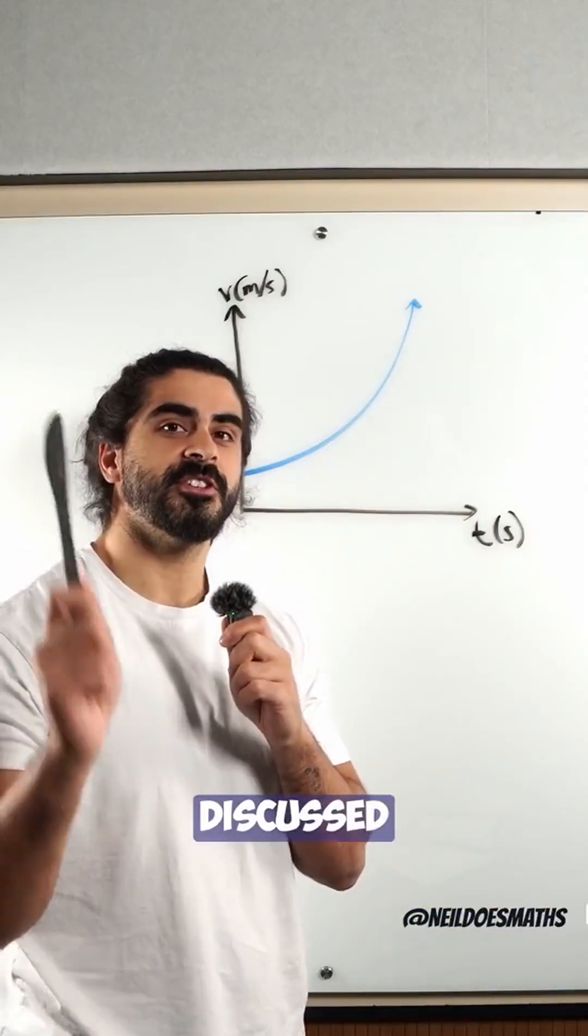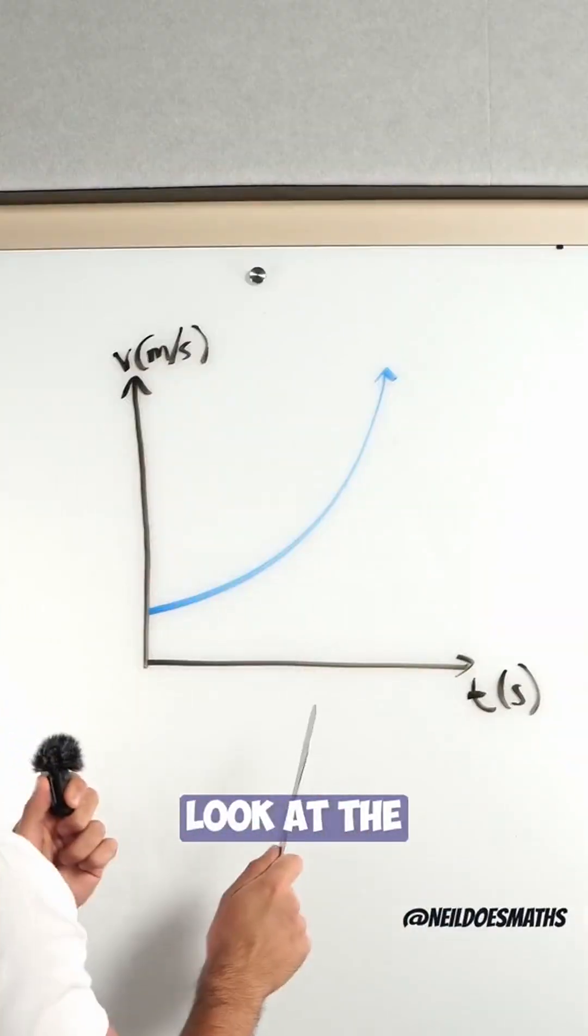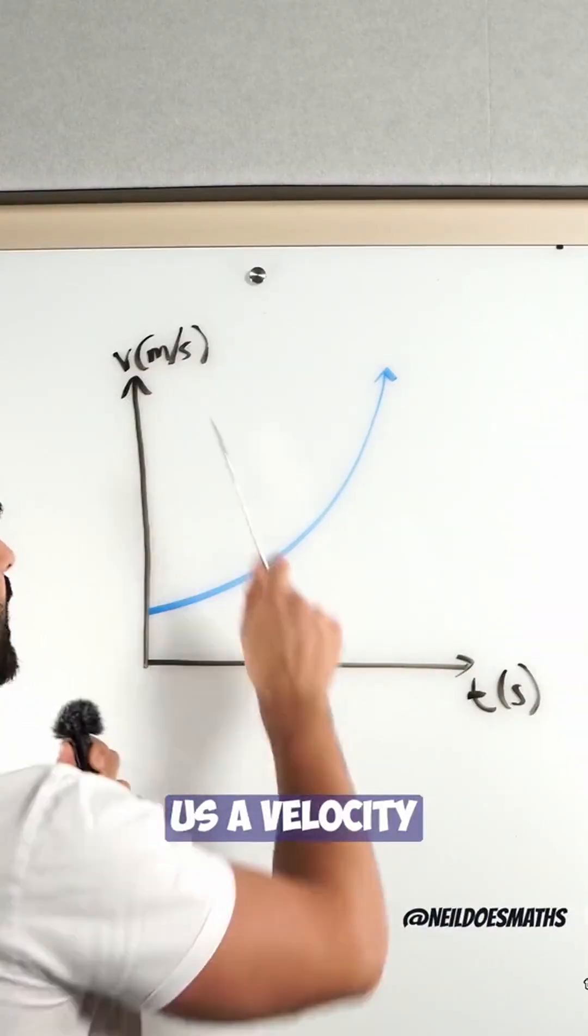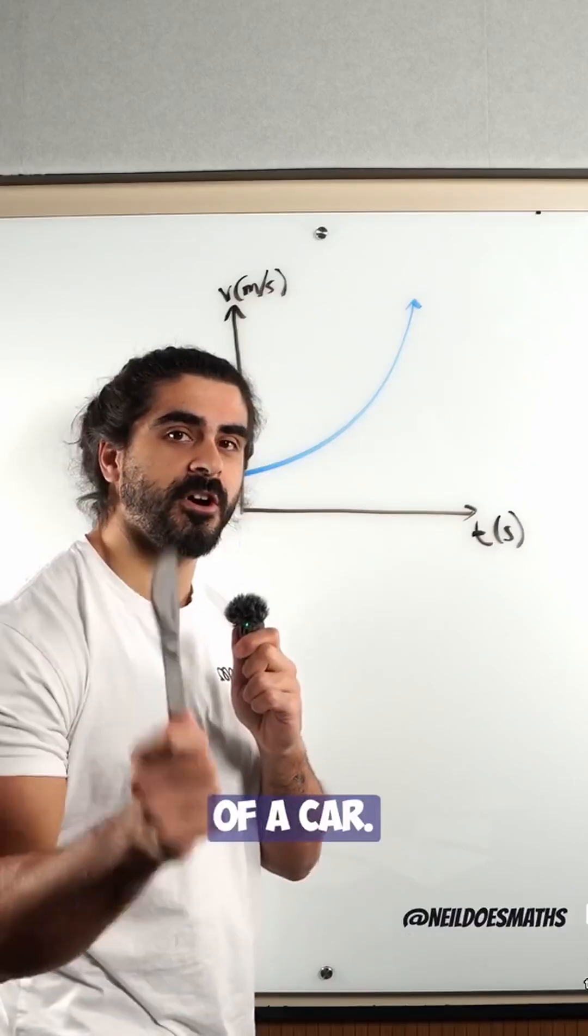In the first episode, we discussed straight lines. Look at the board. It is showing us a velocity time graph which describes the motion of a car.